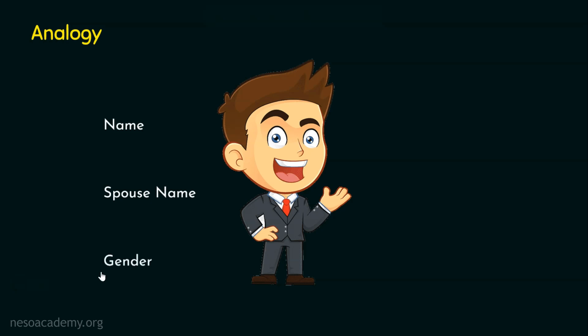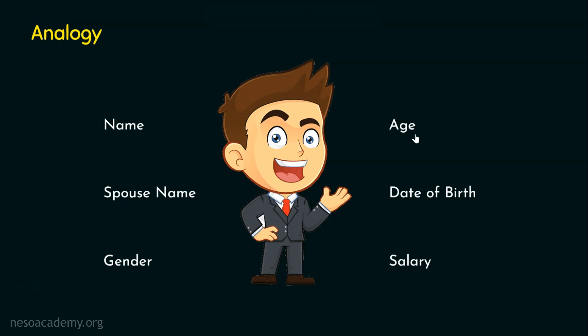Coming to the next field, the gender field shown in the registration form — this can be a mandatory field because it may be either male, female, or transgender. Coming to the next field, the salary field. Here comes another problem. This salary field cannot be a mandatory field, as it is only applicable for people who are employed, entrepreneurs, or have a regular income. The date of birth field can be a mandatory field because everyone will have their date of birth and also their age. So in this form, if you keenly observe, there are two fields that cannot be mandatory.